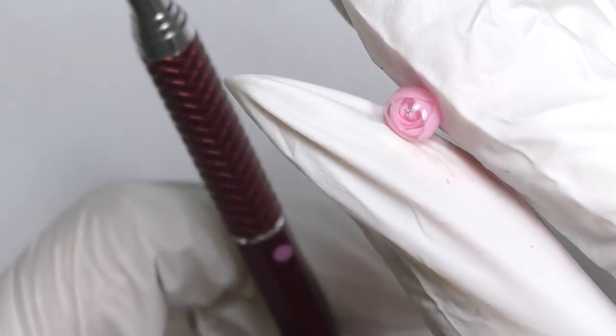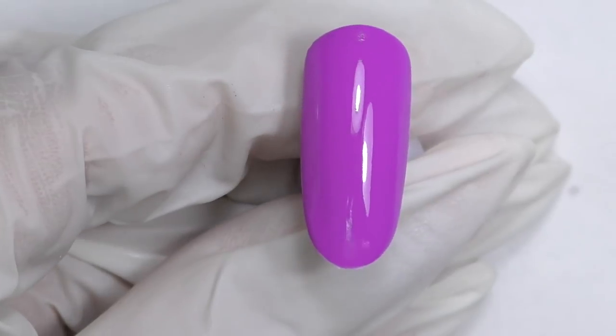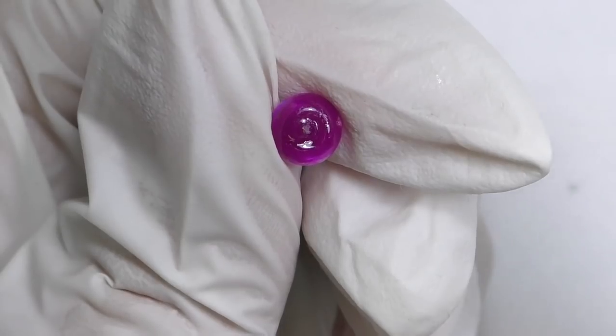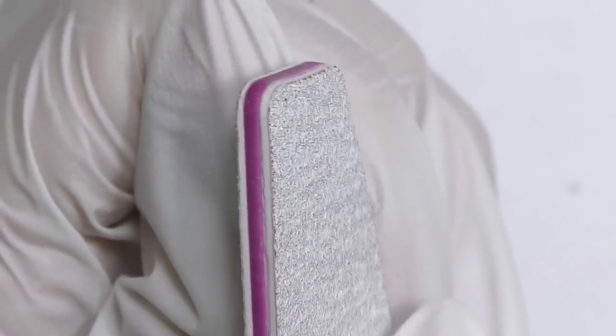So carefully remove it from the dotting tool or from the sharp object, and this is how they look when they're finished.